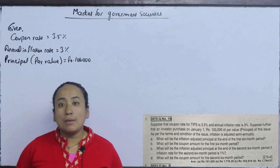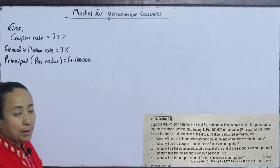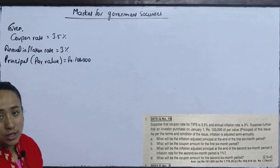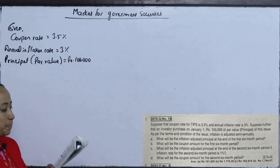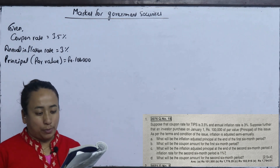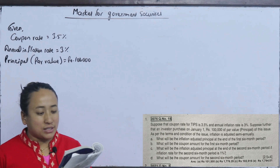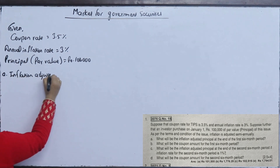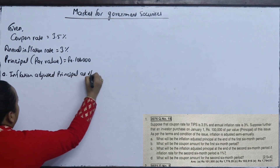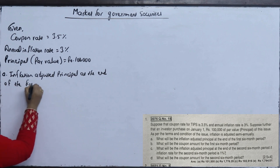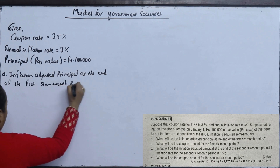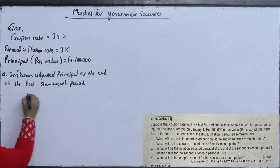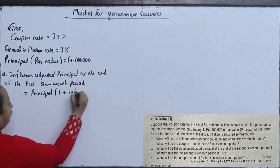Inflation is adjusted semi-annually, meaning every 6 months. The coupon rate is 3.5%. Now, what will be the inflation-adjusted principal at the end of the first six-month period?